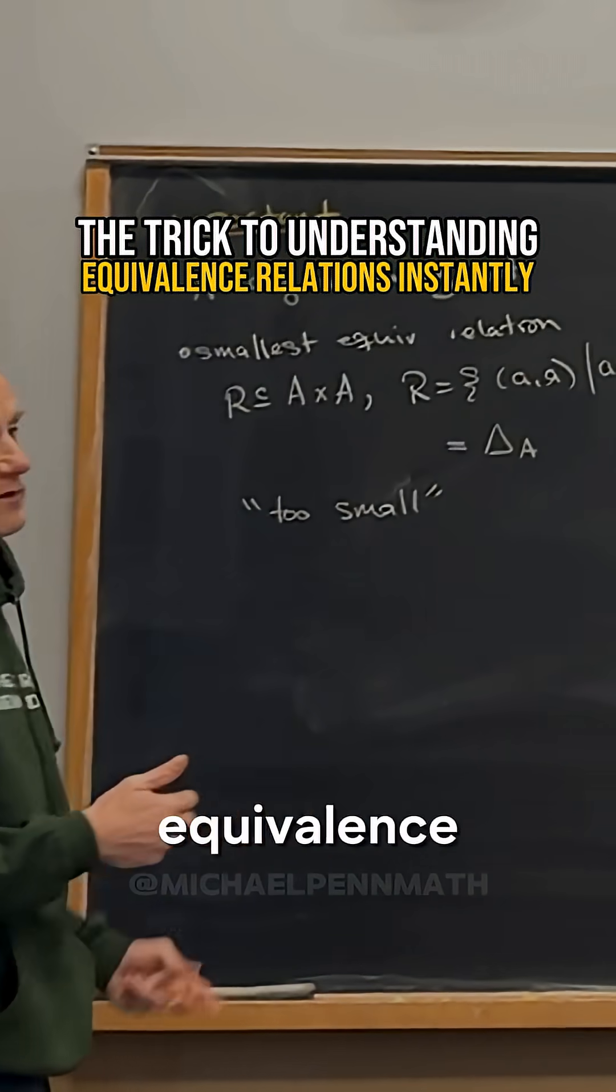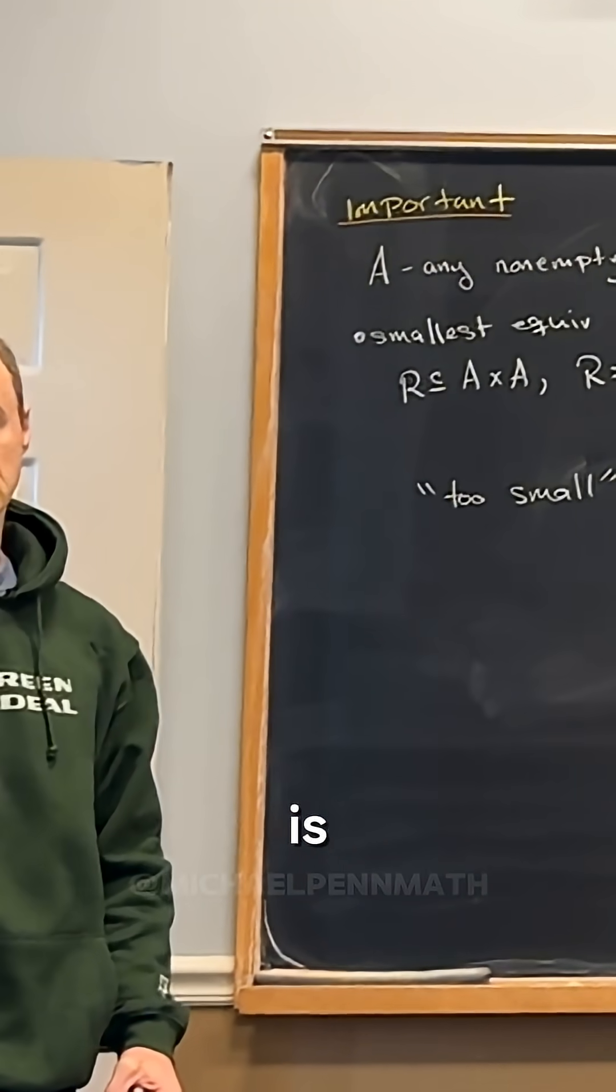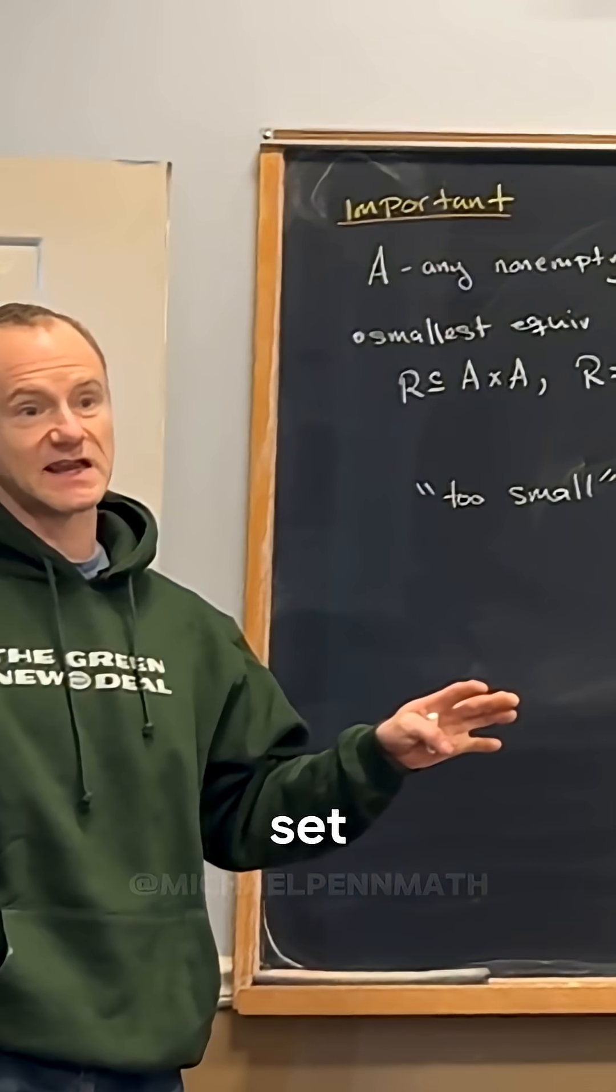So if we're looking at this equivalence relation where things are equal and nothing else is equivalent, notice that that doesn't simplify your object at all. That doesn't simplify the set.